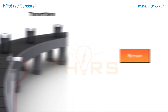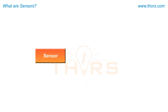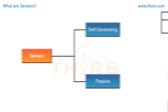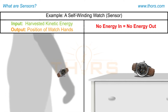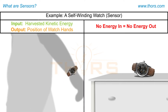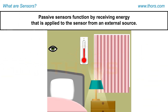There are two types of sensor families, which include self-generating and passive. Self-generating sensors derive the output signal energy from the measurement environment, while passive sensors operate by receiving energy from an external source and modulating or changing this energy to create the signal energy that is the output of the sensor.